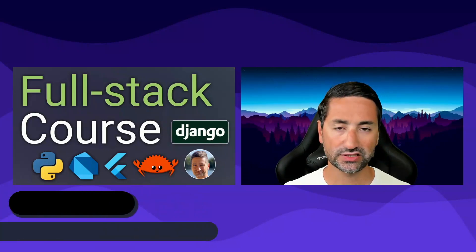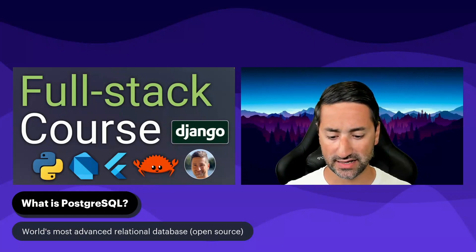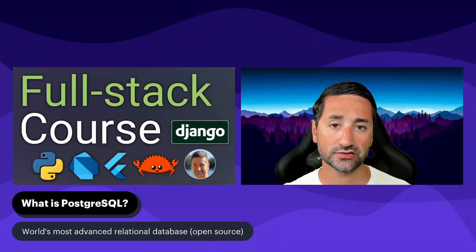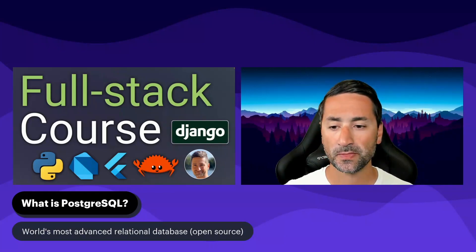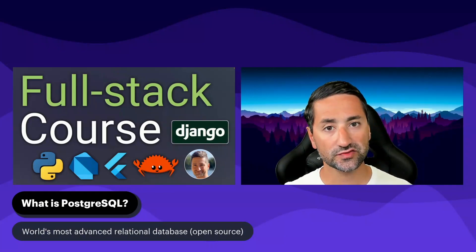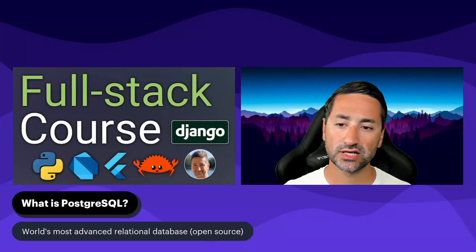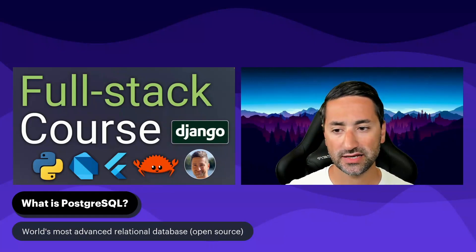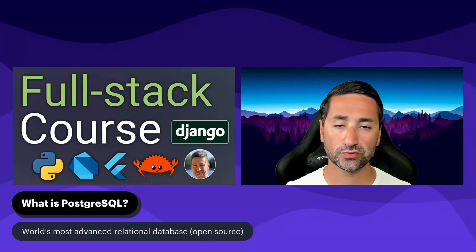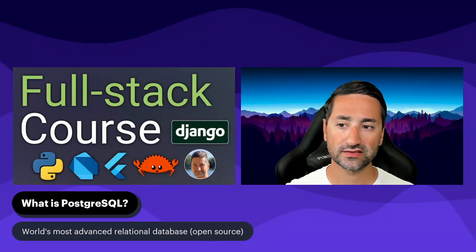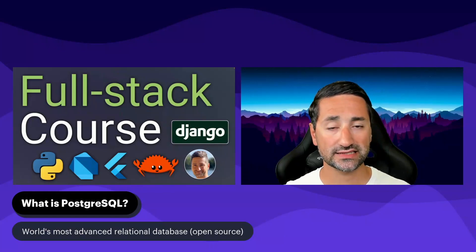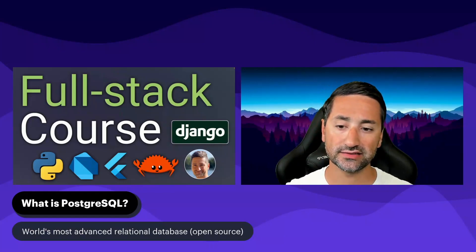So let's quickly talk about what Postgres is. As Postgres itself puts it, it's the world's most advanced relational database, and it's also open source. It is a little bit different from other databases that you may have used before, like MySQL. It has its own commands, which we will also get to know in the coming chapters. It is important that we first focus on the proper installation of Postgres so that it works exactly the same way on Windows, Mac, and Linux.